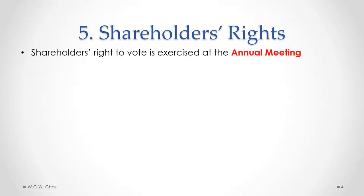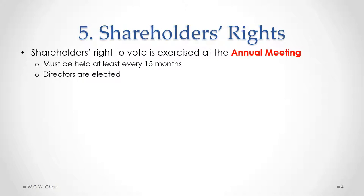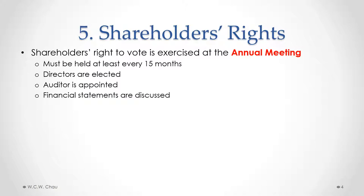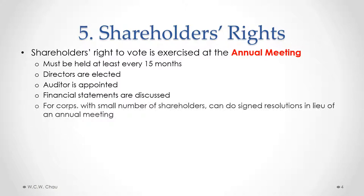The shareholder's right to vote is exercised at an annual meeting. A corporation is required to hold an annual meeting at least every 15 months. At this meeting, the directors are elected and an auditor is appointed. The auditor is usually an accounting firm responsible for auditing the financial statements of the corporation. The financial statements are also presented and discussed at this meeting.